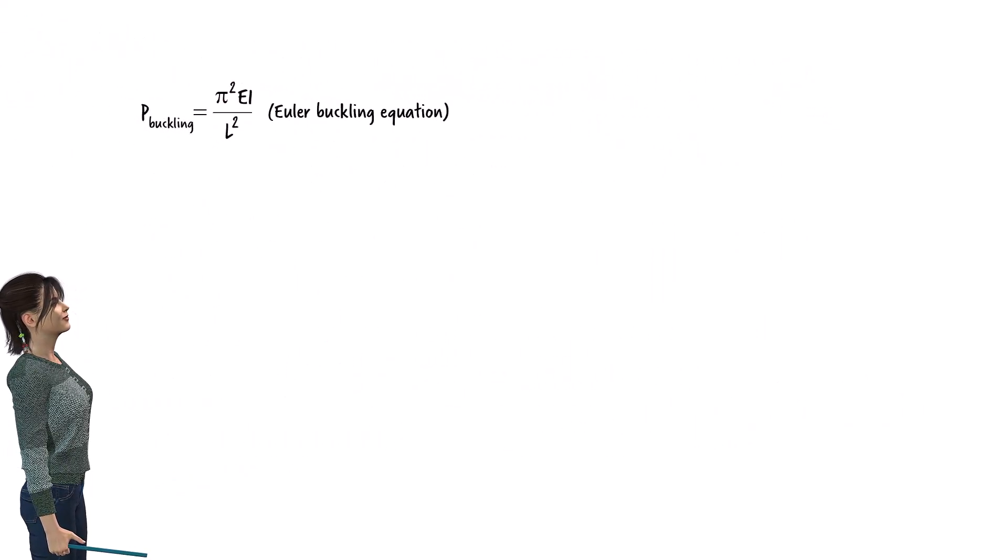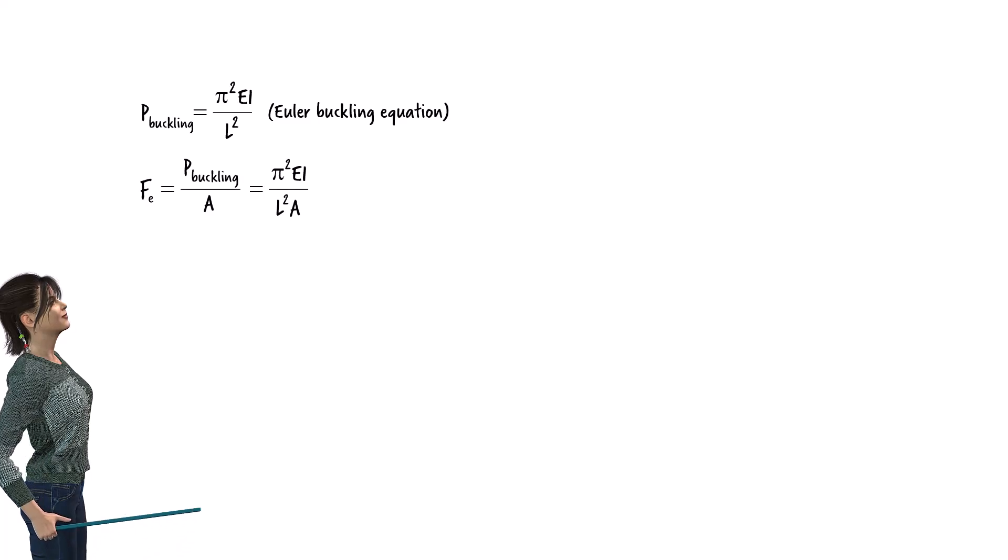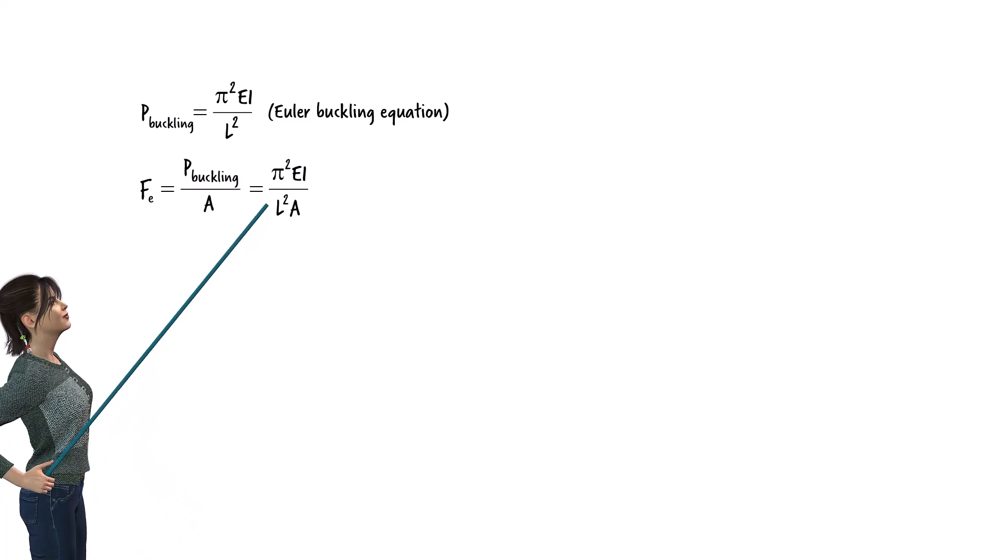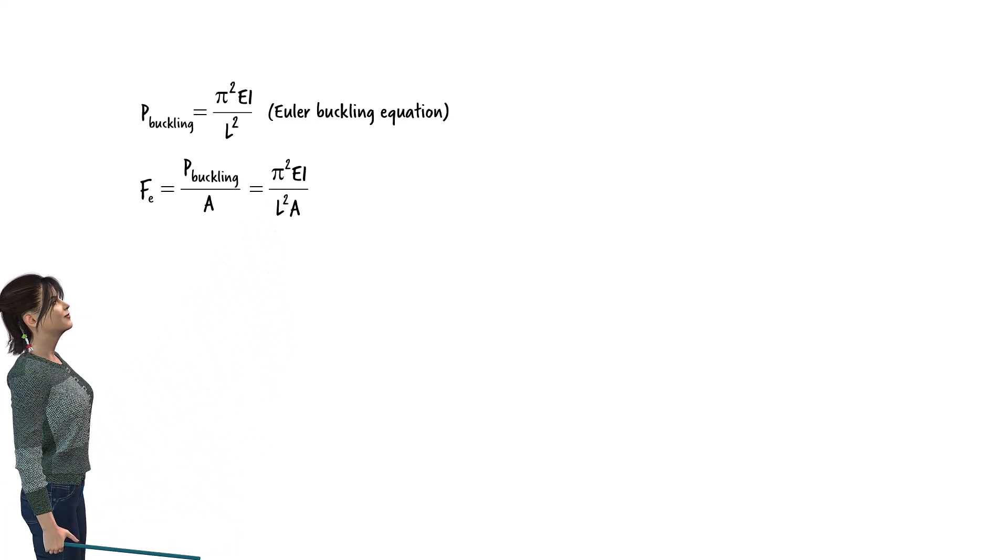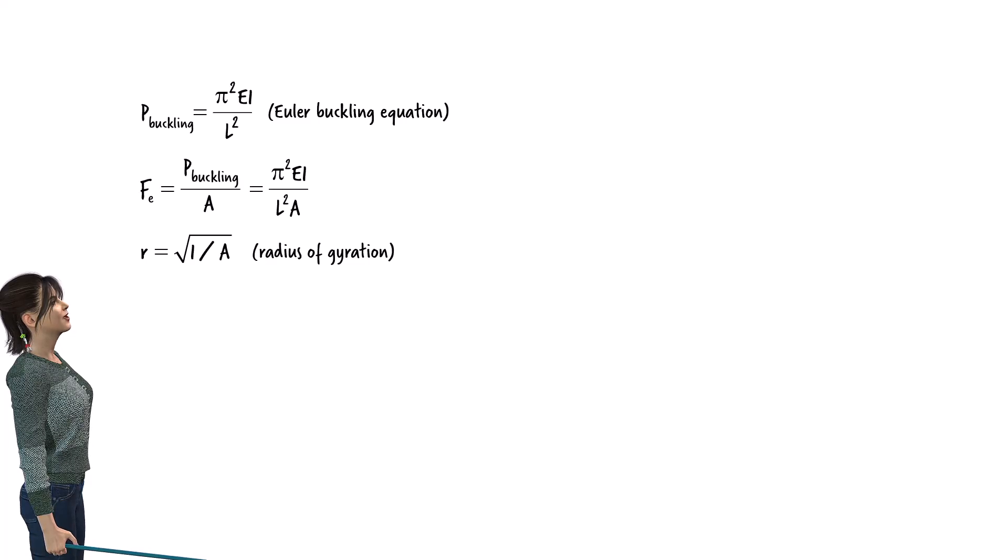We get the buckling stress if we divide the buckling load by the member's cross-sectional area. This is the compressive stress in the member at the onset of buckling. The moment of inertia divided by the cross-sectional area is related to the radius of gyration, R, of the section.